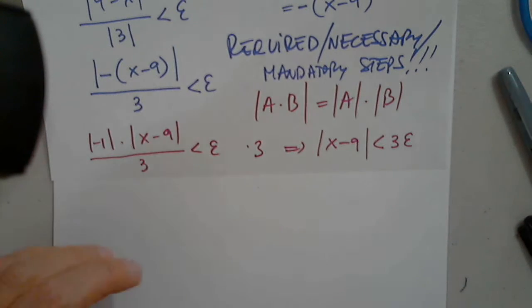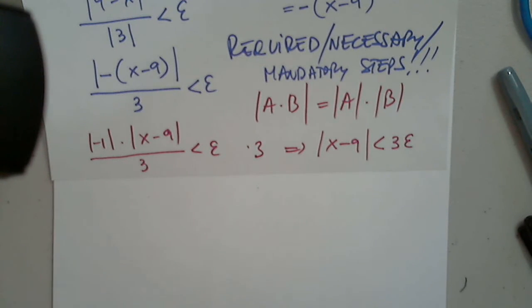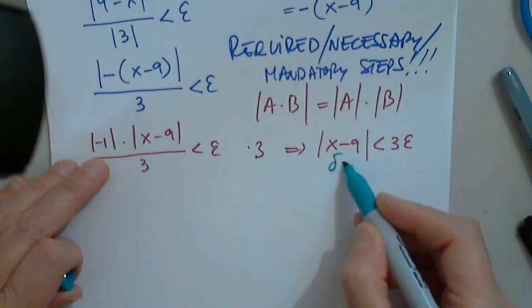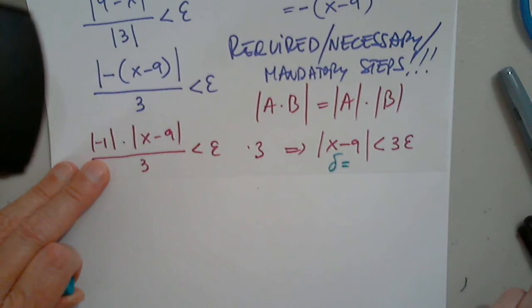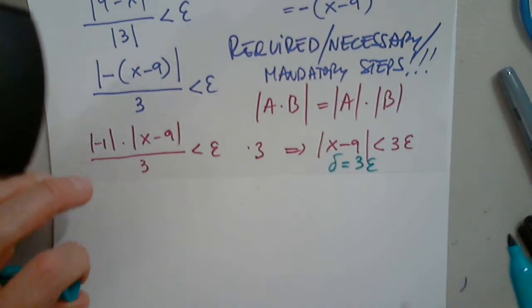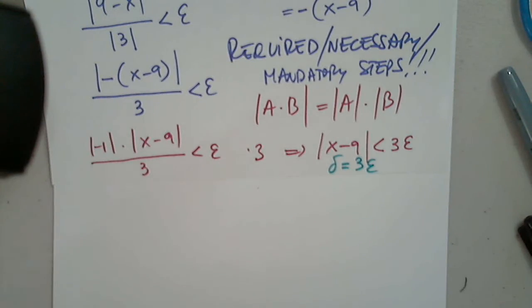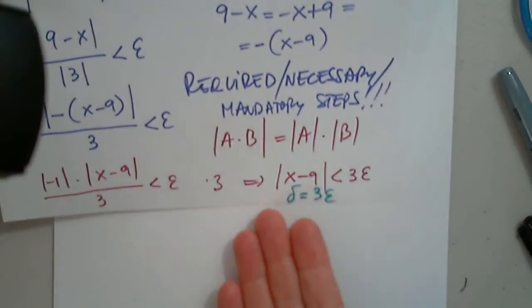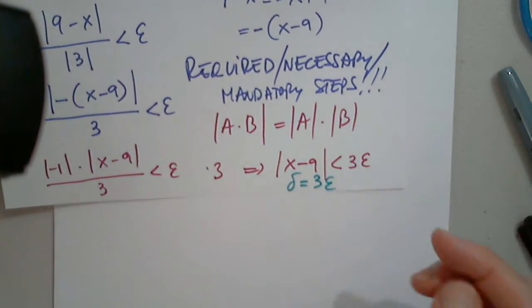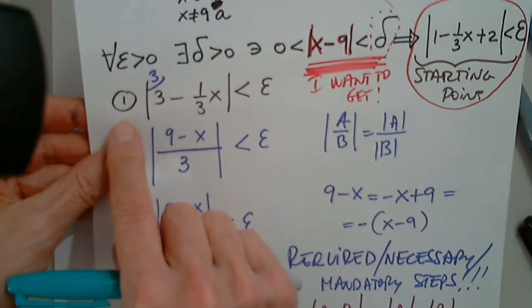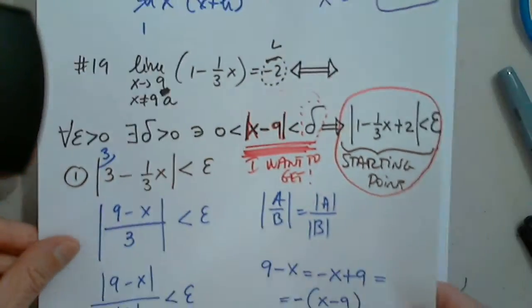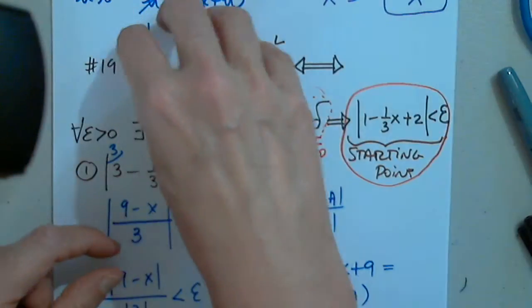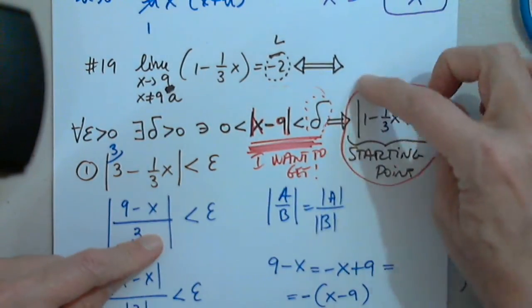Does delta equal three? Why? Just part of it. What do you mean? It has to depend on epsilon. That's it, and it's done simply by comparison. I got exactly what I wanted, so this must be delta. So this is step one. There is also step two. Why? Because we need to show this implies this and this implies this.